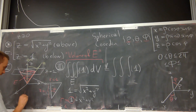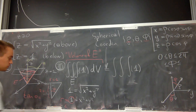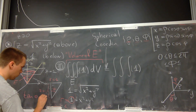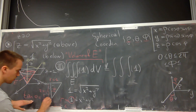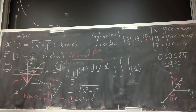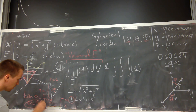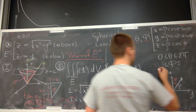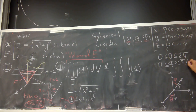I want to find angle φ. The tangent of φ equals opposite over adjacent, which is 1 over 1. Tangent equals 1 means φ equals π/4. So the bounds of φ are from 0 to π/4.